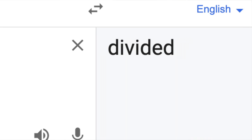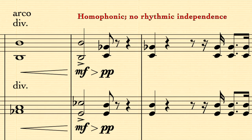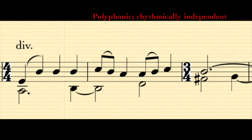Question one: what does it mean? Divisi in Italian literally means divided. Basically, divisi is used when a composer wants a string section, like the first violins or the cellos, to effectively split into two sections. What this means is that half of the section will play a top note and the other half will play a bottom note. In some more complicated examples, we'll see that the halves of sections can play parts that are not only separate from each other in pitch, but also rhythmically independent from one another.